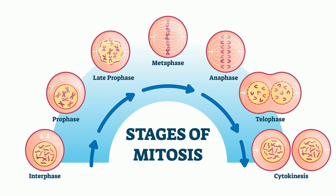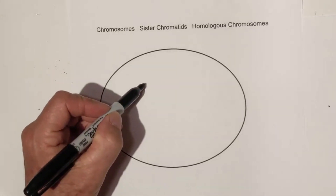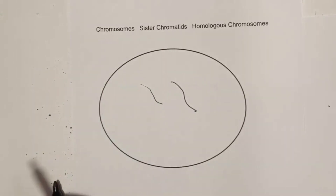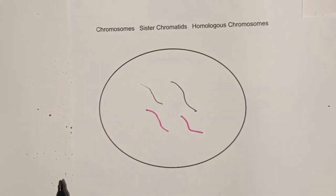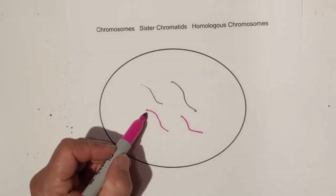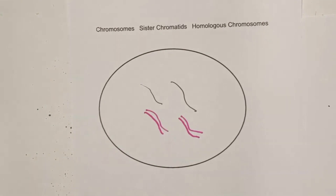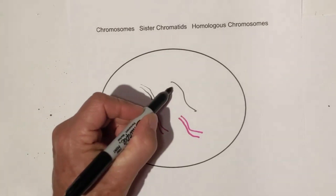Think of interphase — the DNA is kind of like a plate of spaghetti. You have these different segments, kind of how a plate of spaghetti has all the different noodles. Then during interphase, the DNA makes a copy of itself through replication, so now these strands have replicated.